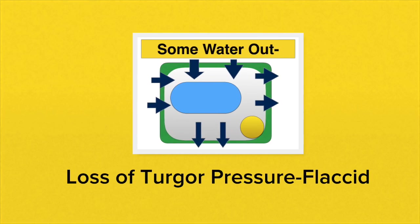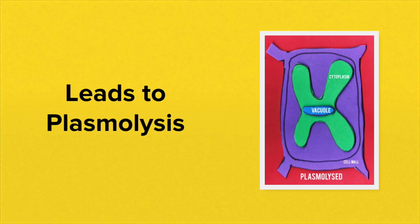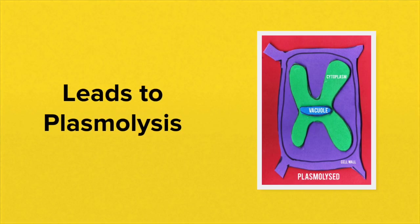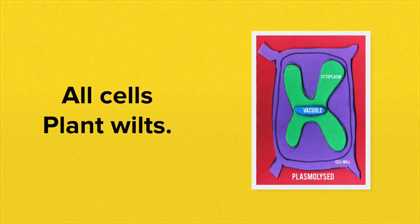Any loss in turgid pressure will result in the plant cells becoming flaccid. And if this loss in turgid pressure continues, it leads to plasmolysis. When all the cells become plasmolyzed, the plant will wilt.